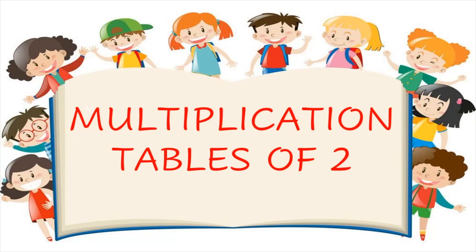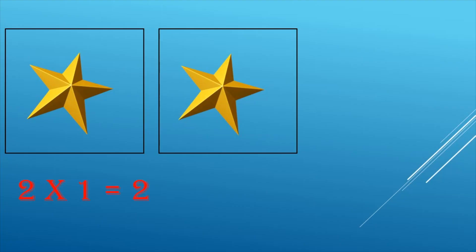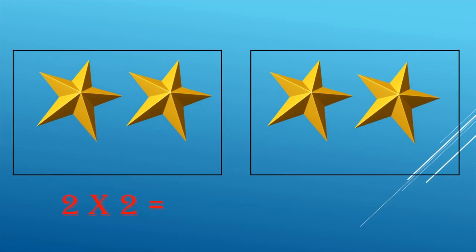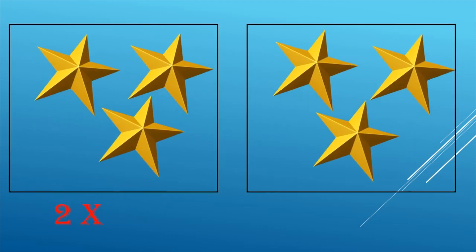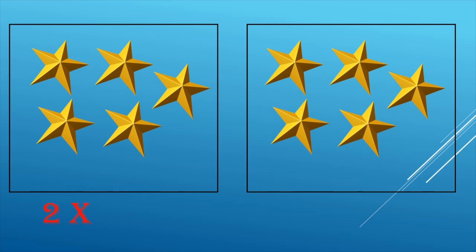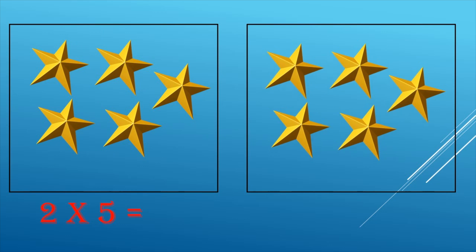Two sets of one star in each — two ones are two. Two sets of two stars in each — two twos are four. Two sets of three stars in each — two threes are six. Two sets of four stars in each — two fours are eight. Two sets of five stars in each — two fives are ten.